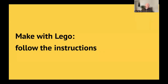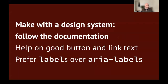Making with Lego is also about following the instructions — with a design system, that means following the documentation. The documentation might give advice on good text for buttons, which should describe the action, or good text for links, which should describe the destination. It might offer advice on which option is better when there's a choice. For instance, for form fields it might say we prefer the label element with a visible label over the ARIA label attribute — both provide an accessible name, but one is slightly better and more broadly supported.